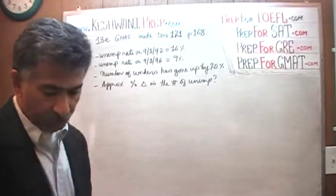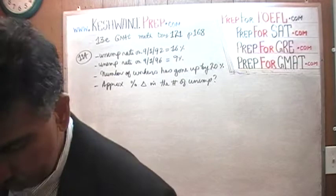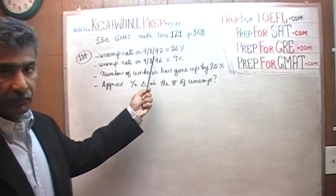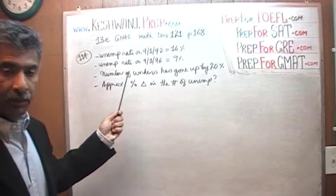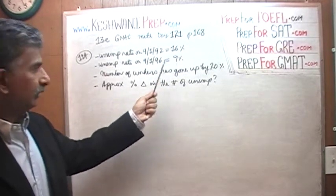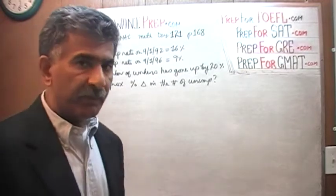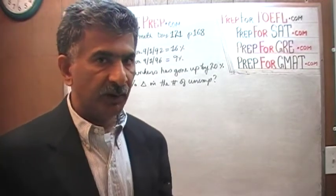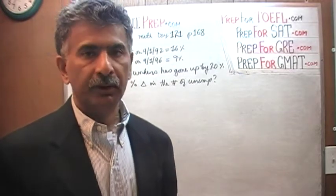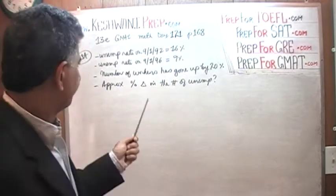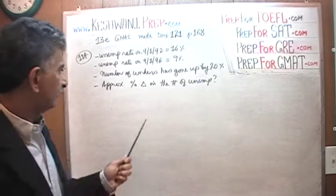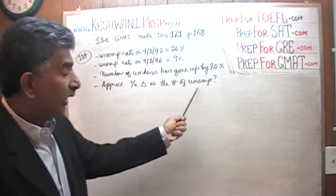Please turn to it. Problem number 114 is what we are going to do. In problem 114 we are told that we had an unemployment rate of 16% on September 1st of 1992, and an unemployment rate of 9% on September 1st of 1996. The September 1st part is here for one and only one reason: to annoy you. Just ignore it — it plays no role. It is just 1992 and 1996. We are further told that the number of workers has gone up by 20%. The question simply is: what was the percentage change in the number of unemployed workers?